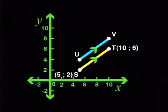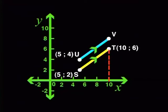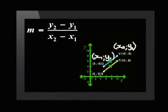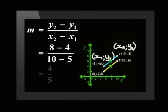Can you find the coordinates of U and V? The x value is still 5 and the y value will be 4, so the coordinates of U will be (5, 4). For V, the x value is still 10 and the y value will be 6 plus 2, that's 8. The coordinates of V will be (10, 8). Good work! Now we can work out the gradient of the translated line UV: 8 minus 4 all divided by 10 minus 5, which is 4 divided by 5.